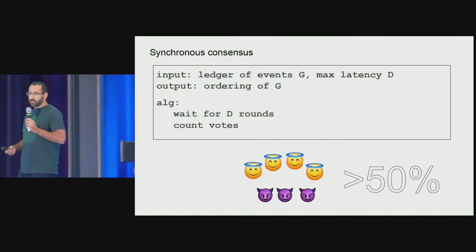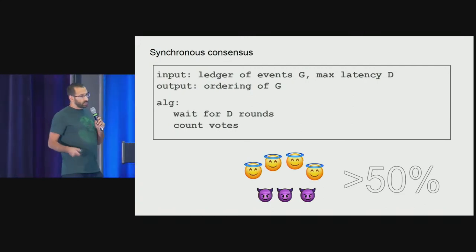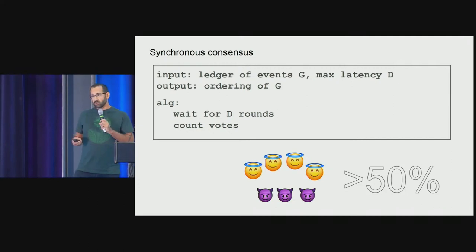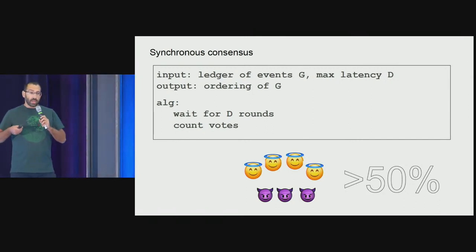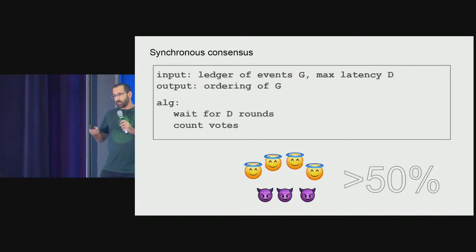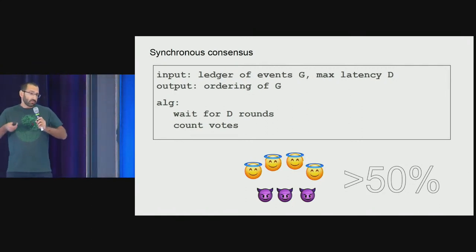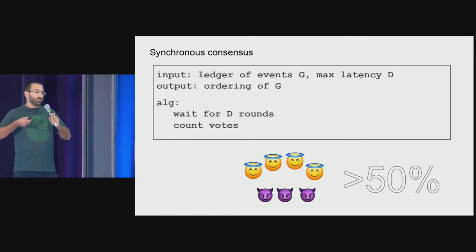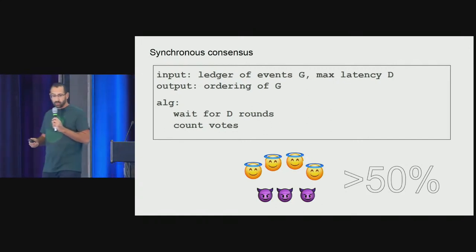A bit of background intuition about synchronous versus partially synchronous protocols. Synchronous protocols are consensus protocols where the system assumes an agreed global upper bound on network delay — for instance, Bitcoin's 10 minutes. The output is an ordering of events in the system, and you can achieve resiliency to 49% attackers. This is a known result.